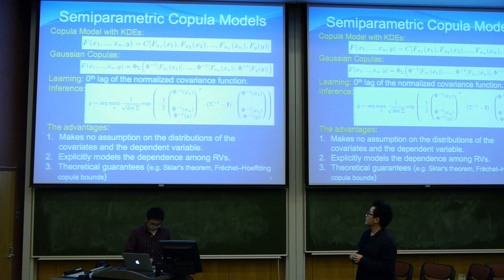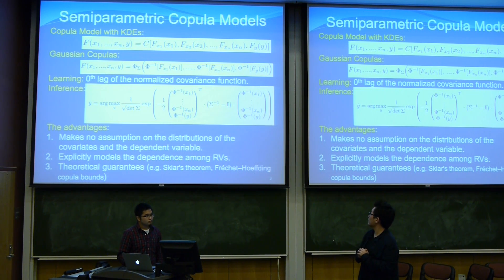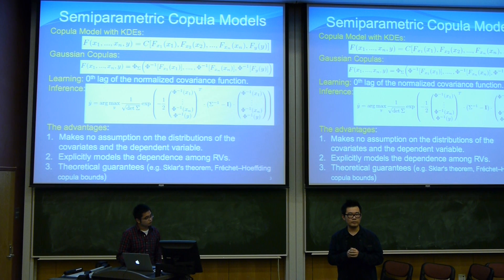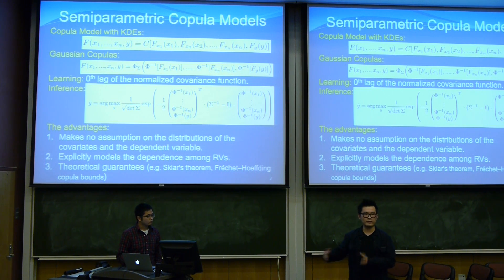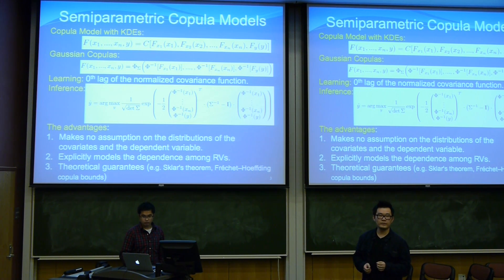We show some examples of the Gaussian copula, which can be used to model correlations between marginal CDFs. Learning this model is pretty easy because for the parametric part you only need to look at a covariance function. For inference it's a little tricky, because theoretically you should calculate the expected value of y as the conditional distribution of y given all the x's, but solving this integral is actually quite difficult. So we approximate the result by sampling different values of y that maximize the density of the Gaussian copula PDF.